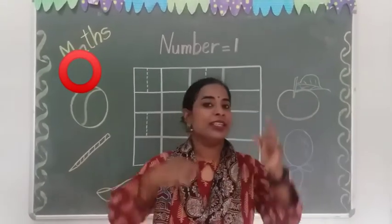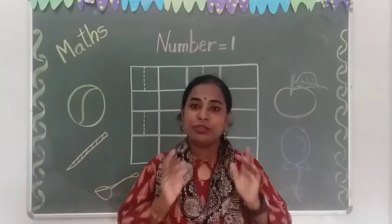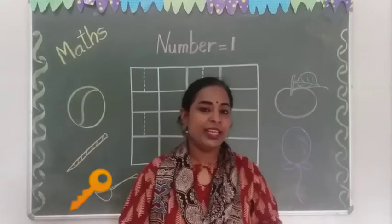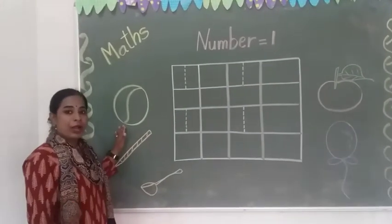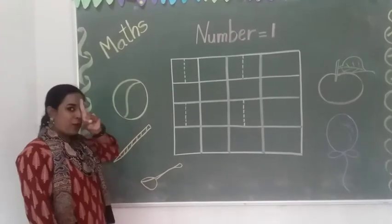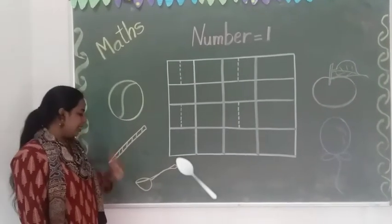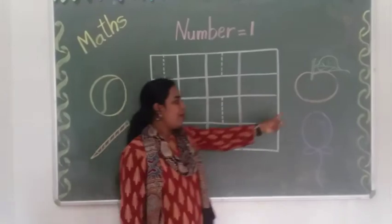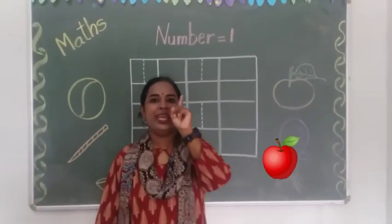How many balls? One ball. How many pencils? One pencil. One spoon. One apple. One balloon. So this is one. One means one single.